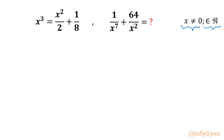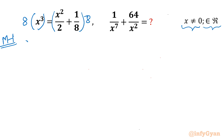I will demonstrate two different ways to solve this problem. In Method 1, I will begin by multiplying both sides by 8. So the left-hand side becomes 8x³, and the right-hand side will have 4x² plus 1.